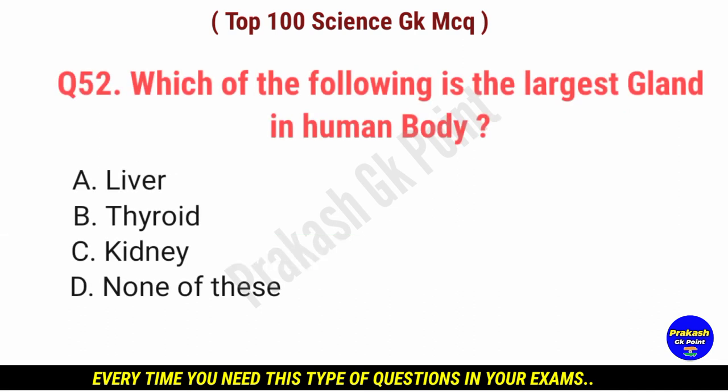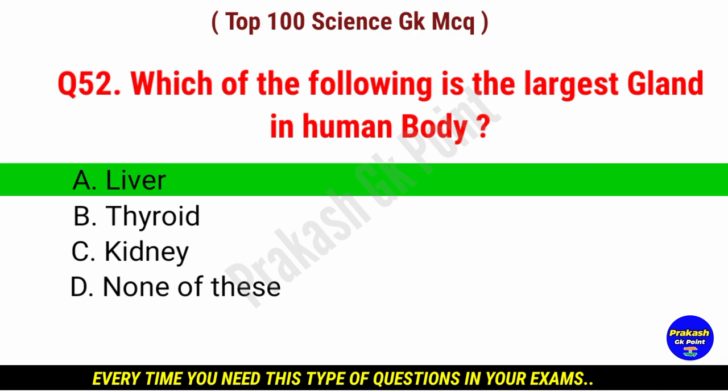Which of the following is the largest gland in human body? Answer: option A, liver.